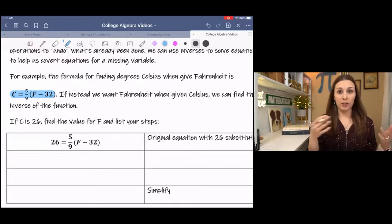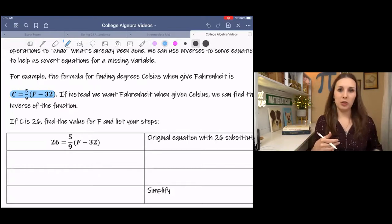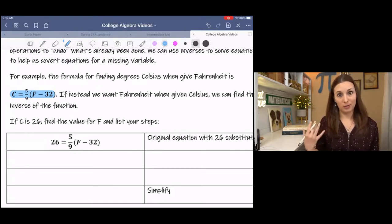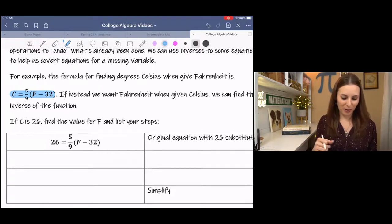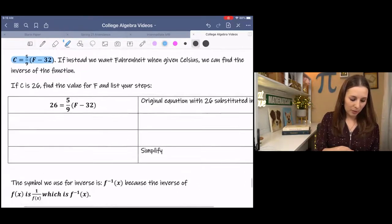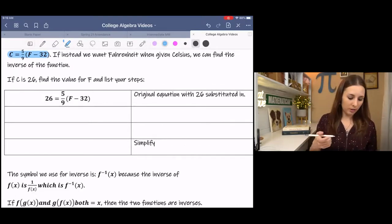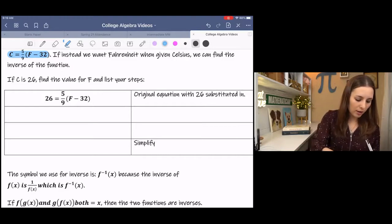Well, let's say we want to go the other way. Let's say we want to find Fahrenheit when we're given Celsius. So I have an example here where degrees Celsius is 26, and we're trying to figure out what that is in Fahrenheit because that's what we're familiar with. So I'm just going to write the steps for this process.